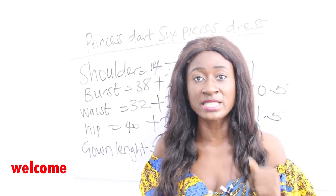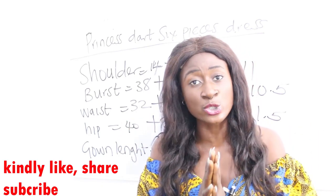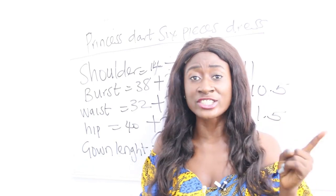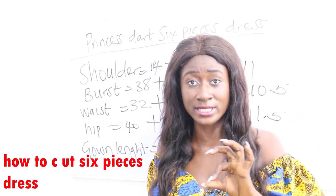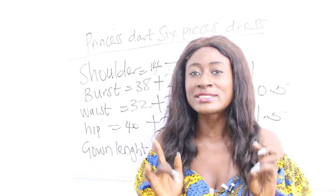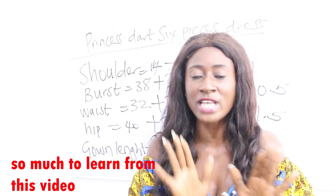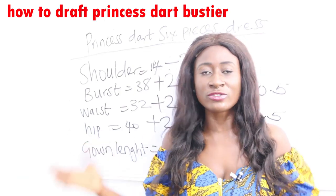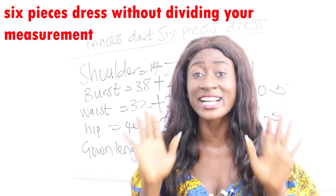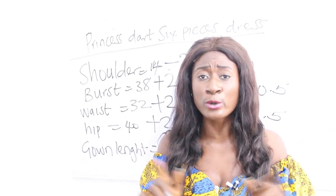In this video we are going to achieve: how to draft a princess dart bustier, how to achieve a six-piece dress without dividing your measurement by six, and how to achieve a princess dart six-piece gown without any joining at the waistline. Regularly people tend to have joining at the waistline to differentiate the princess dart from the six-piece gown, but today we achieve that without any joining and without dividing by six.